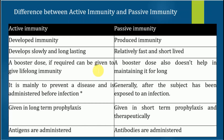Active immunity develops slowly but is long-lasting. In response to detection of antigens, antibody production starts, taking about five to six days, but it remains active for a long period of time. Passive immunity is relatively fast because we directly supply the antibodies, which immediately fight the antigen and provide recovery to the patient, but it is short-lived — the antibodies are destroyed within a short period. In active immunity, booster doses can be given to provide lifelong immunity.